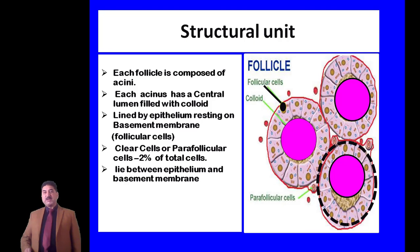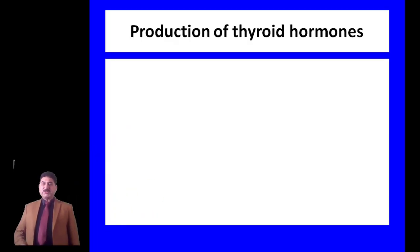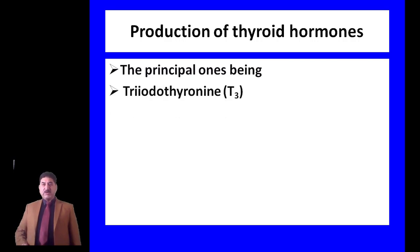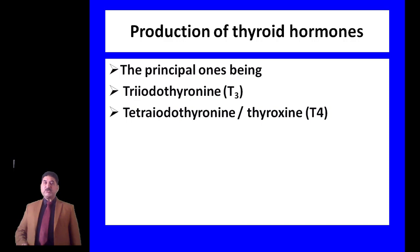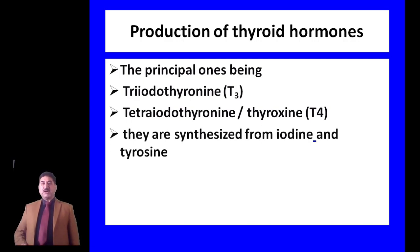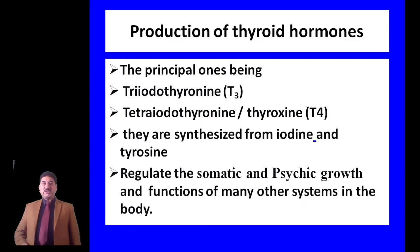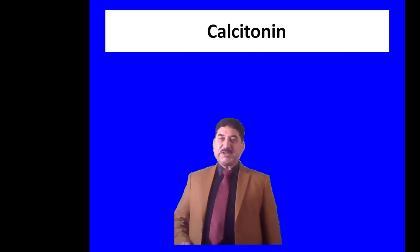Production of hormones is an important function of the thyroid gland. The principal hormones are triiodothyronine (T3) and tetraiodothyronine (T4), also called thyroxine. These hormones are synthesized from iodine and tyrosine and regulate somatic and psychic growth and functions of many systems in the body.